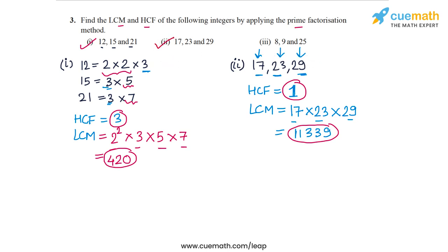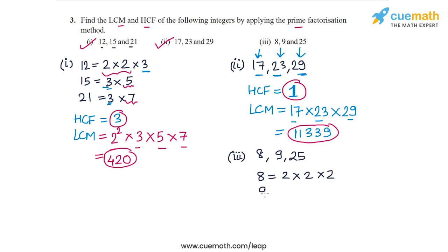Now let's look at part 3. The set of integers is 8, 9 and 25. These are small numbers and we can prime factorize them directly. 8 is equal to 2 into 2 into 2, 9 is equal to 3 into 3, and 25 is equal to 5 into 5.